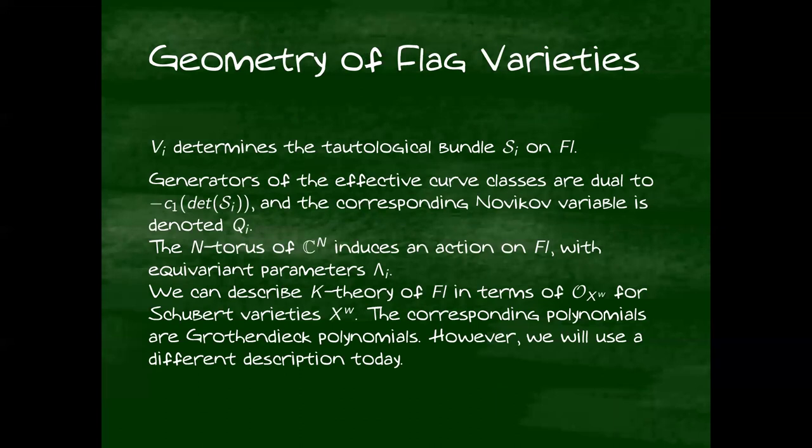So from this description, we can develop some of the geometry of these flag varieties. So the bundle v_i, I mean, sorry, the subspace v_i at each point determines a bundle on the flag called S_i. And the curve classes here are dual to the first Chern class of the determinant of S_i, and we label the Novikov variables q_i. So for the Grassmannian, there's only one. And the action of the n-torus on C^n introduces an action on the flag, and we always work equivariantly with respect to that action.